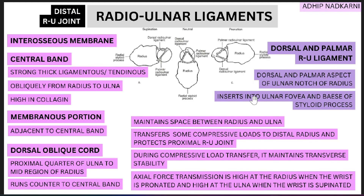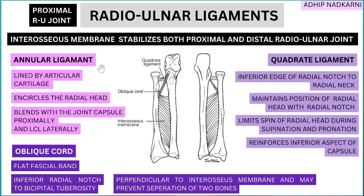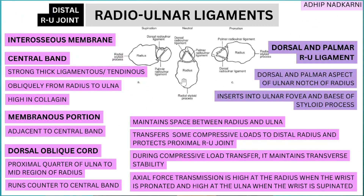To summarize: at the proximal radio-ulnar joint we saw the annular ligament — providing good articulation for the radius; the quadrate ligament — preventing excessive spin; and the oblique cord — preventing the two bones from separating. At the distal radio-ulnar joint we saw the dorsal and palmar radio-ulnar ligaments, then the interosseous membrane with its three parts — the central band, membranous portion, and dorsal cord — whose function is to stabilize both joints and distribute forces. Next video we will look at the muscles around the radio-ulnar joint, so stay tuned and thank you for watching.